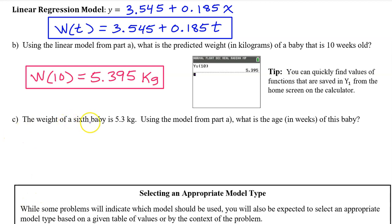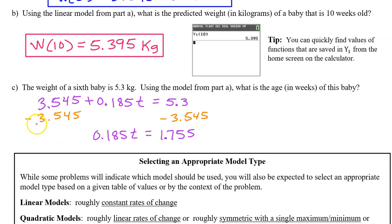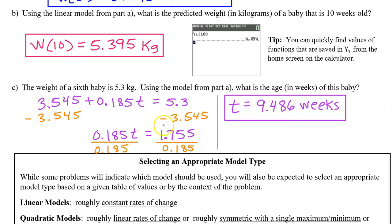Part c, the weight of a sixth baby is 5.3 kilograms. Using the model from part a, what is the age in weeks of this baby? 5.3 kilograms is the weight of the baby. So let's substitute that for w and solve for t. So we get this equation. We can either solve this by hand or we could use the calculator. To solve it by hand, you would subtract 3.545 from both sides. Subtracting 3.545 from both sides gives us this. And dividing both sides by 0.185 gives us t equals 9.486 weeks.